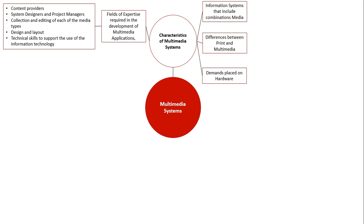The collection and editing of each type of media — how we edit videos using specific software, how we create animations using specific software — a whole range of different software is needed to create all the different components and then put them all together. The design and layout of these projects covers how we make them look appealing and cater to their target audience. And then the technical skills to support the use of information technology, because it can get quite intense when creating these projects. They involve pixel by pixel design in graphic design, and animating things so they look fluid. There is a lot of skill in learning the software to create these projects, and it's an acquired skill that over time and training you get good at.